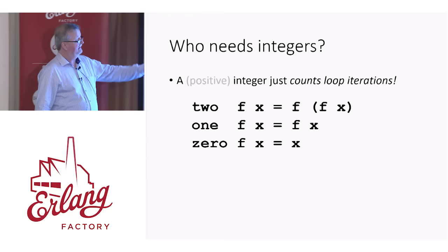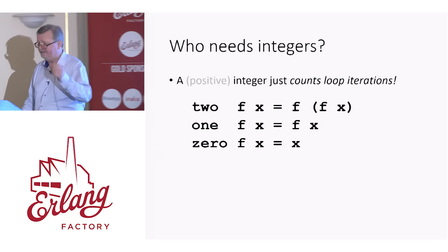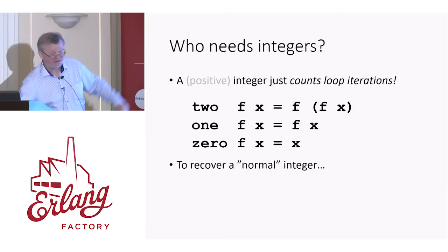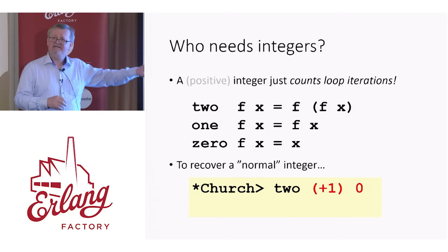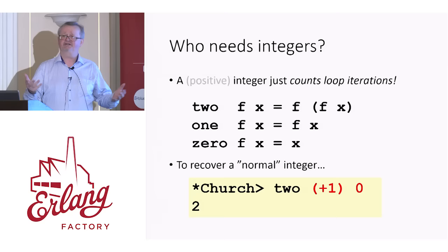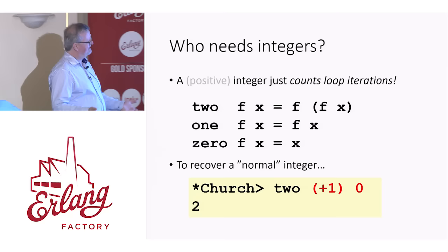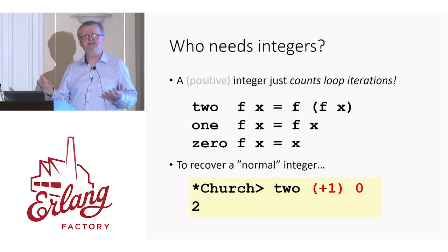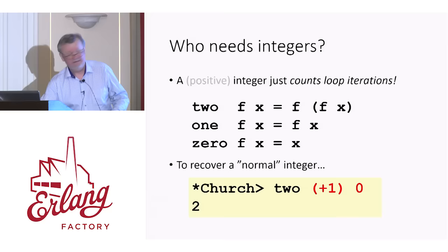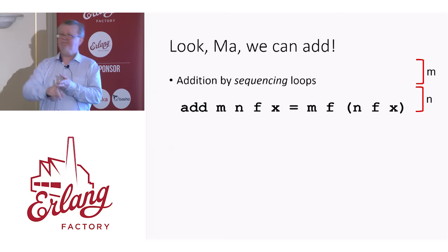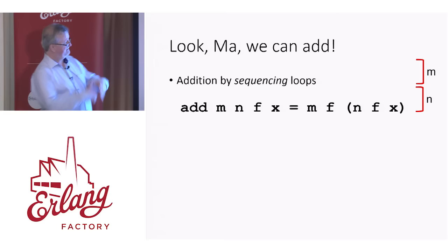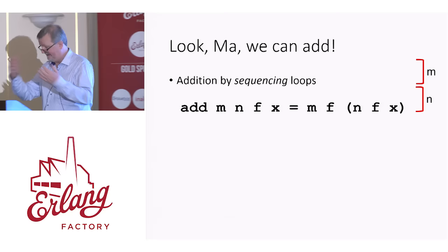If we want to recover a normal integer from a function, it's easy to do. If these are defined in Haskell, I can turn the function two into the Haskell integer two just by iterating a loop body that adds one starting from the integer zero. So you can see that all of the information is in these functions, and I'm able to extract integer values from them again. I can represent integers as functions. But can I do things with them? What do you want to do with integers? Add them together, for example.